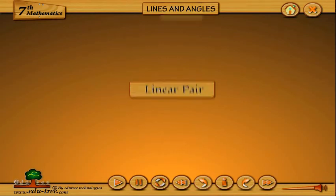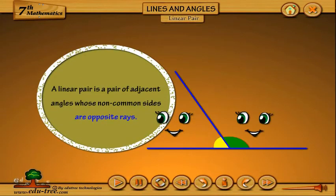Linear pair. A linear pair is a pair of adjacent angles whose non-common sides are opposite rays.